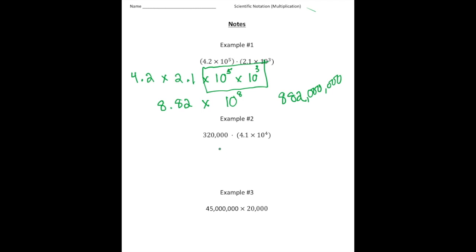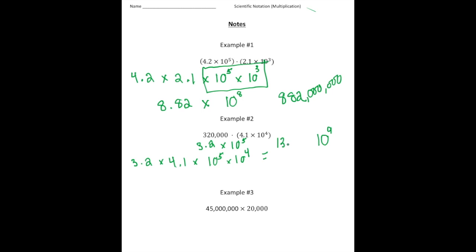The second problem: notice we have 320,000 written in standard form, and then 4.1 times 10 to the fourth written in scientific notation. So I'm going to first convert 320,000 into scientific notation — that's going to be 3.2 times 10 to the fifth power. Now I'm going to rearrange these, so it's going to be 3.2 times 4.1 times 10 to the fifth times 10 to the fourth. When I simplify this, 10 to the fifth times 10 to the fourth gives us 10 to the ninth power. And when I multiply 3.2 times 4.1, I get 13.12.